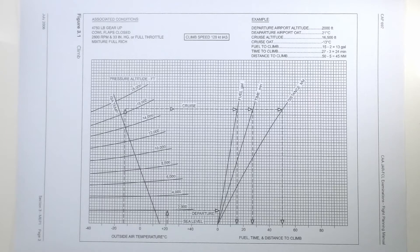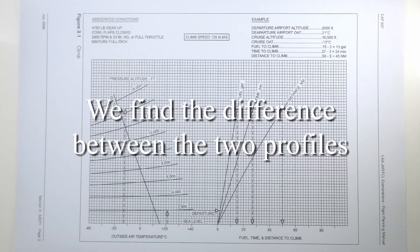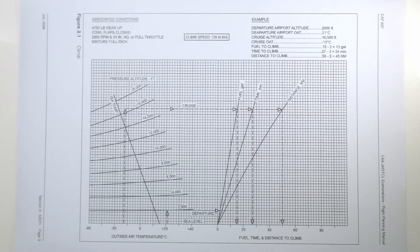We'll calculate sea level to 6,000 and sea level to 13,000 and find the difference between the two since the performance for both aircraft would be the same from sea level to 6,000 feet. If we subtract that then we get the remainder of the fuel time and distance from 6,000 feet to 13,000 feet.